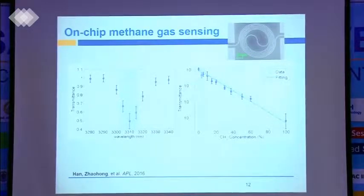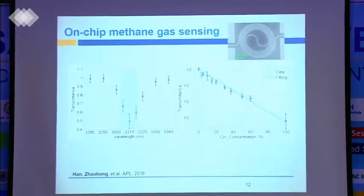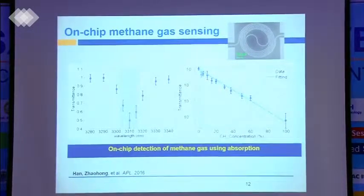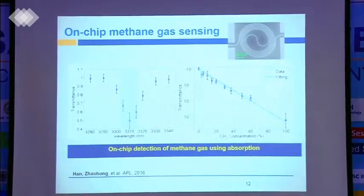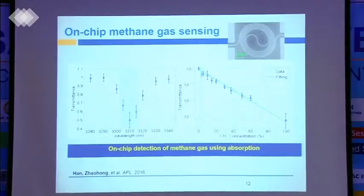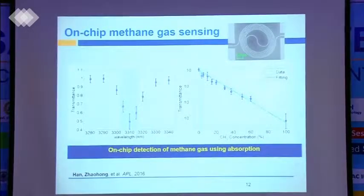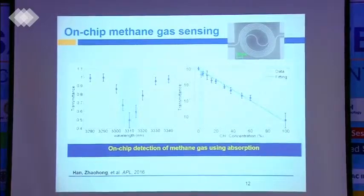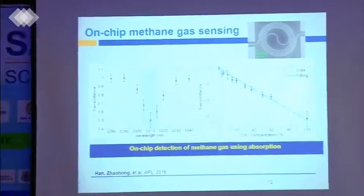So that is the actual part of sensing. It's just how does light interact with the chemical, and how do we monitor that interaction? We have shown on-chip detection of methane gas using absorption. Using absorption is very helpful because that is your fingerprint — that is your selectivity. It is not just telling you some gas is present, but it tells you specifically that methane gas is present on the sensor. That is quite important.